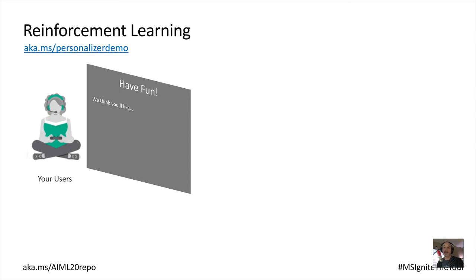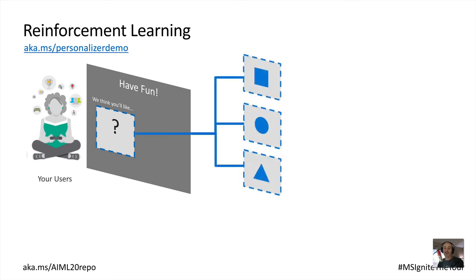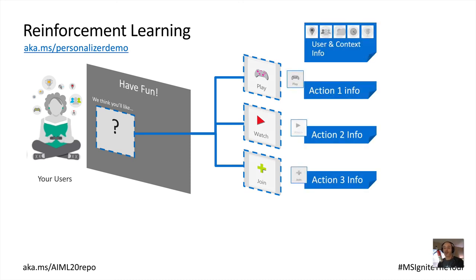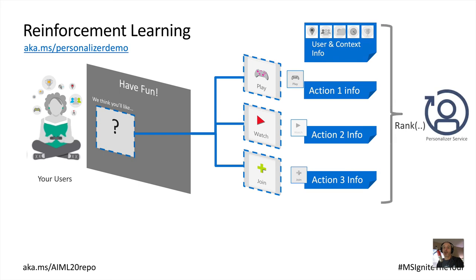Personalizer implements reinforcement learning. Suppose we want to display a hero action to the user — for a gaming app maybe we want them to play a game, watch a movie, or join a clan. Based on that user's history and contextual information like their location, time of day, and day of the week, the Personalizer service ranks the possible actions and suggests the best one to promote.